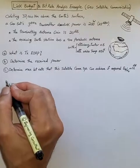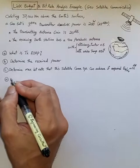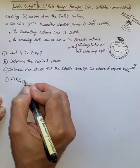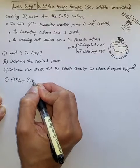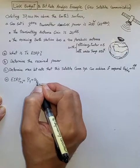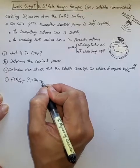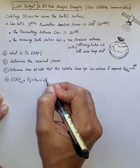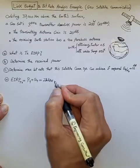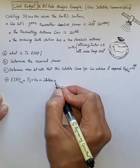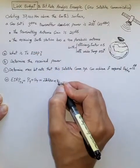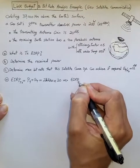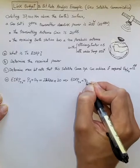For Part A, the EIRP of the transmitter is just transmit power in dBW plus GT, which is the transmitter gain in dB. We have 23 dBW transmit power for PT, and the transmitting antenna gain GT is given as 20 dB. So the transmitter EIRP is 43 dBi.